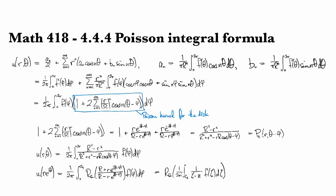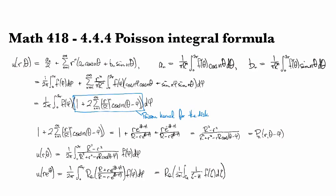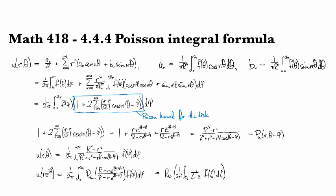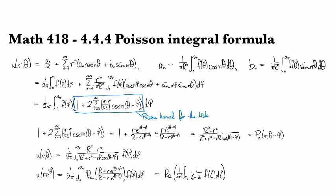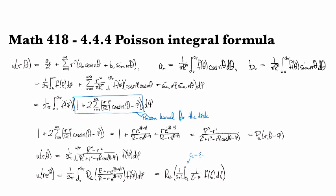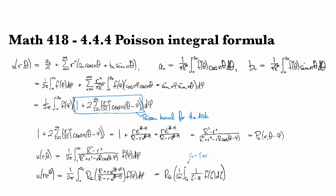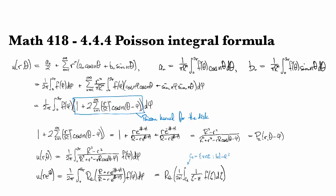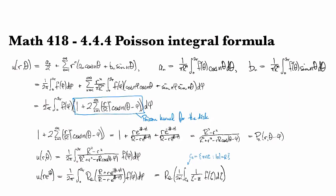So this is just a line integral around the circle. It's done in the complex plane. And the C_r here—this is all of the numbers in the complex plane that have a modulus equal to r.